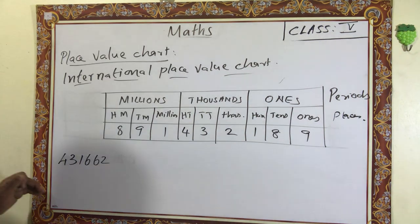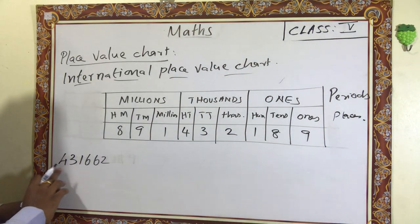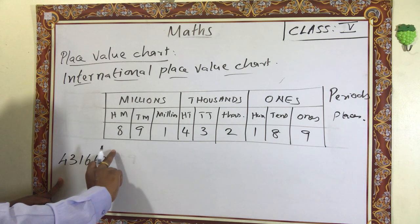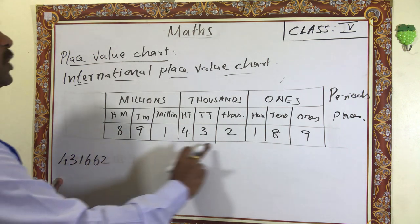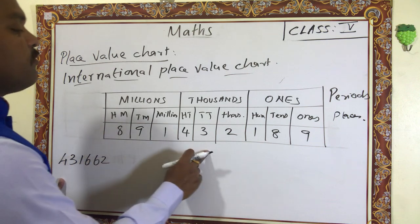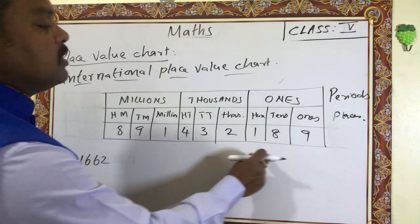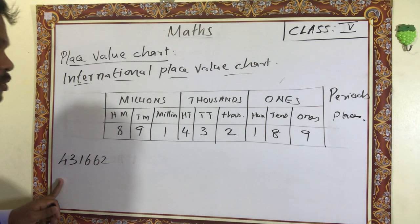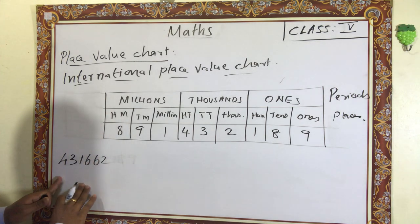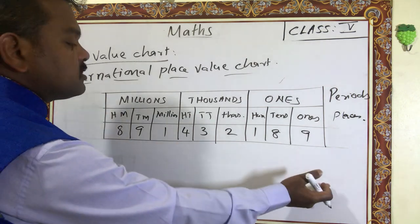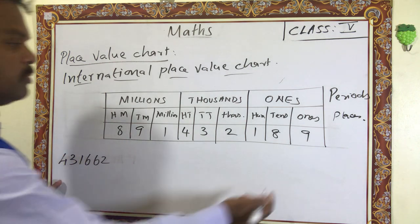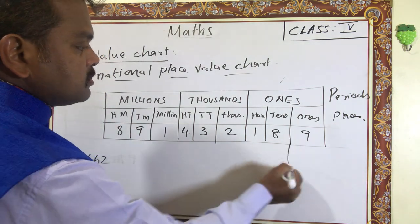Now see another number in the international place value system. First count the digits: one, two, three, four, five, six — only six digits. If you start writing from the left side, the remaining three columns will be empty, which is not correct. That is why you must always write the number from right side to left side.